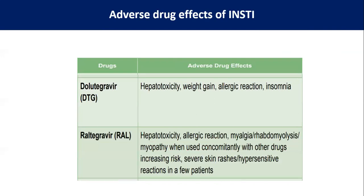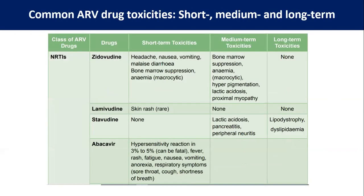Dolutegravir and raltegravir have similar side effects; however, the intensity or severity is much less with dolutegravir. These include hepatotoxicity, weight gain, allergic reaction, and insomnia. Myalgia, rhabdomyolysis, and myopathy are more common with raltegravir, which also has increased risk for rash or hypersensitivity. For NRTIs as a drug class — zidovudine, lamivudine, stavudine, and abacavir — toxicities can be divided into short-term, medium-term, and long-term. Since stavudine is no longer in the program, we focus on short-term and medium-term toxicities.